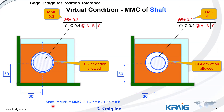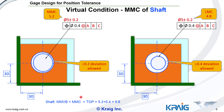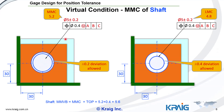Now, what if the toleranced feature is a shaft instead of a hole? For a hole, the MMVB is the inner boundary; for a shaft, the boundary is the outer boundary. To calculate the outer boundary MMVB, we use the biggest shaft — which is 5.2 — plus the position tolerance 0.4, because the biggest shaft has no bonus. So 5.2 plus 0.4 gives MMVB = 5.6 for the shaft.